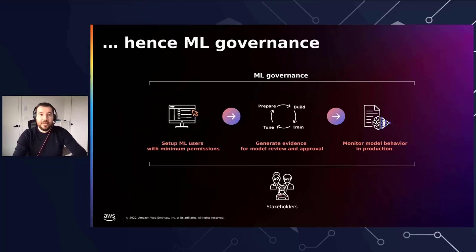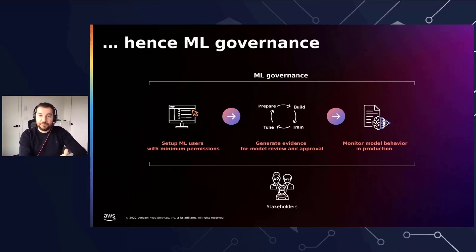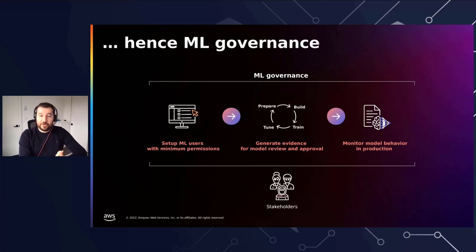Only after users are onboarded can ML practitioners access the ML system to prepare data, build, train, and tune the model. While doing so, they need to capture evidence throughout the model development process to use during model review and approval. Once stakeholders agree the model meets their business objectives, ML engineers work on deploying the model to production for consumption by business applications. After deployment, the third stage is monitoring model behavior in production — models must be monitored continuously for drift and bias so they perform as expected and do not negatively impact business outcomes.